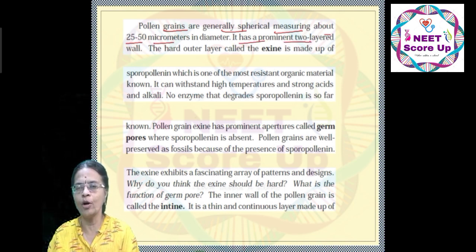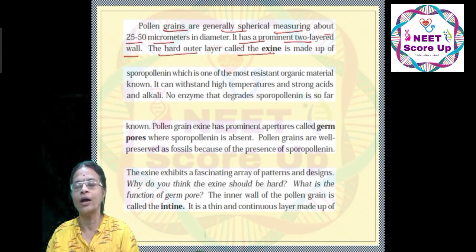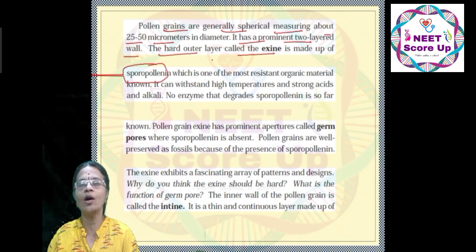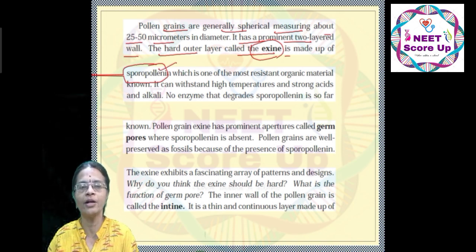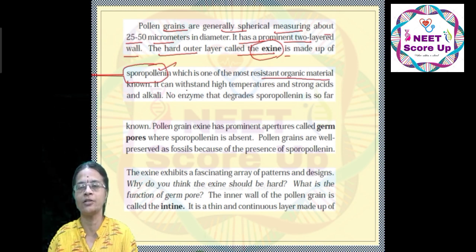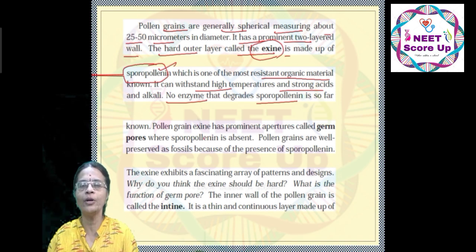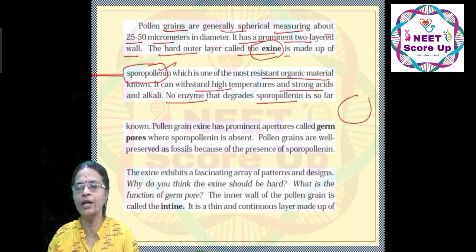The pollen grain has a prominent two-layered wall. The hard outer layer is called the exine. The exine is made up of sporopollenin. It is made up of organic substances, which is why it withstands high temperatures and strong acids. No enzyme can dissolve or degrade sporopollenin. If you look at the layers, there is an inner layer and an outer layer — the outer layer is the exine.